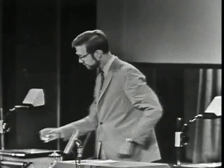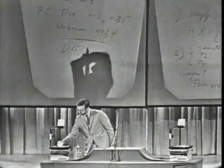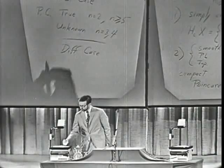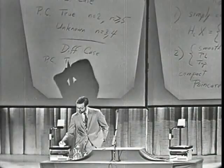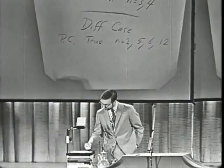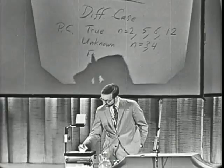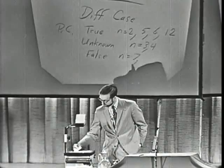Let's look at the differentiable case. The differentiable version of the Poincaré conjecture turns out to be true if n equals 2, 5, 6, or 12; unknown for n equals 3 or 4; and it turns out to be false if n equals 7, 8, 9, 10, 11, 13, 14, presumably for all larger numbers — though it isn't actually known that it's false for all larger numbers.